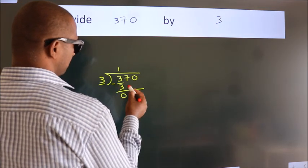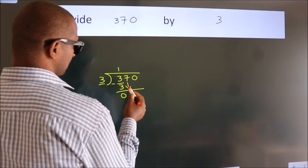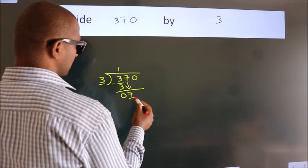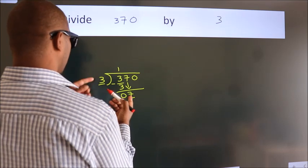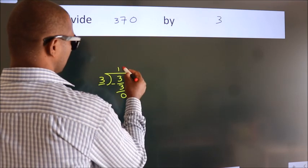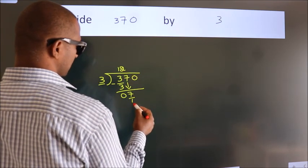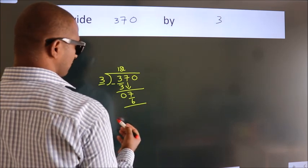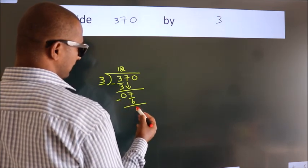After this, bring down the beside number. So, 7 down. A number close to 7 in 3 table is 3 2s, 6. Now, we subtract. We get 1.